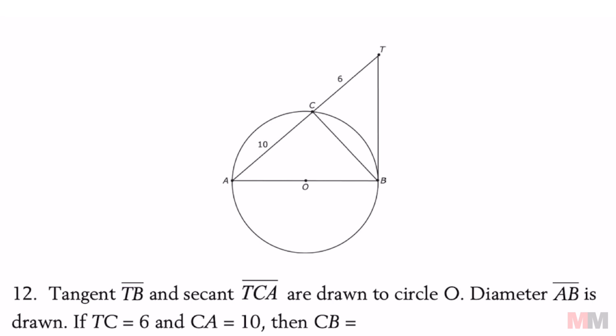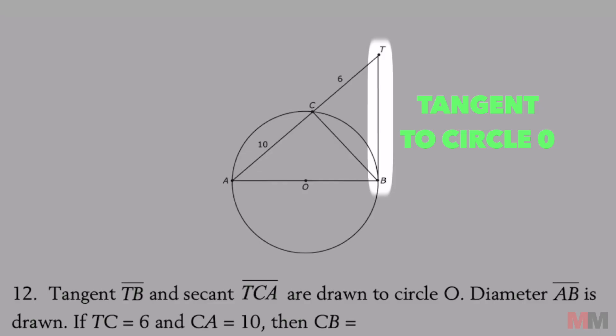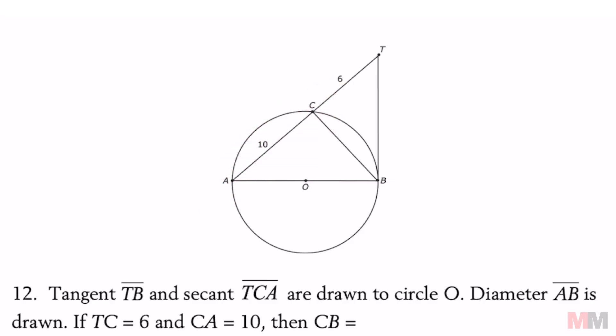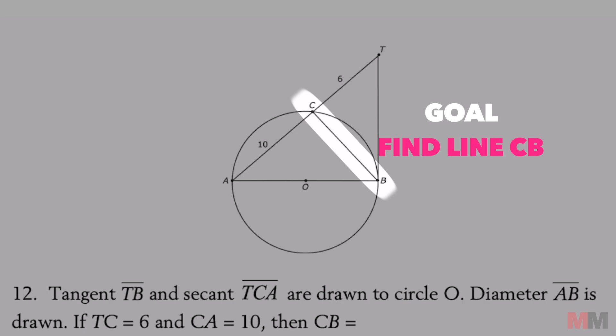Here's a really good and more challenging circle question that I've seen. We got tangent TB and secant TCA that are drawn to the circle O. Diameter AB is drawn, TC equals 6, and CA equals 10. Our goal here is to find line segment CB.